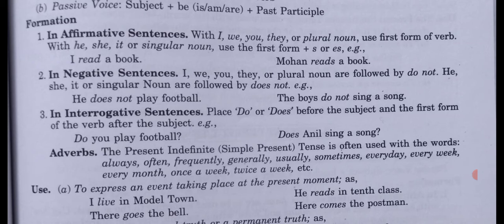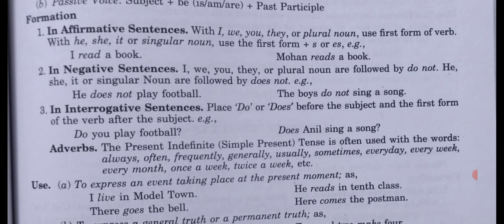In affirmative sentences with I, we, you, they, or a plural noun, use only the first form of the verb. With he, she, it, or any singular noun, use the first form plus 's' or 'es'. Examples: 'I read a book.' 'Mohan reads a book.' — Mohan is a singular subject, so we add 's' to the verb.